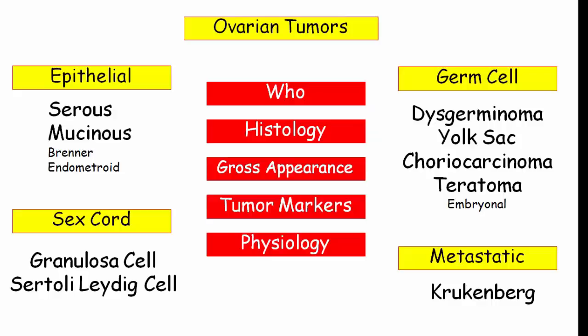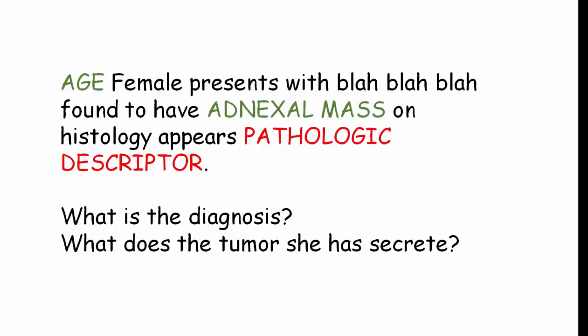So what will a typical question look like? It will start with the age of the patient — this can really help you narrow down your tumor, so pay attention to it. Then it will go on to describe some signs and symptoms — could be fullness, pelvic pain, constitutional symptoms — but these symptoms generally aren't key because they will almost always then give you that they found an adnexal mass on exam. There is one caveat to this that we will touch on later with sex cord tumors. Then they will give you some pathologic description and expect you to either make the diagnosis, or take it one step further and ask about a tumor marker.